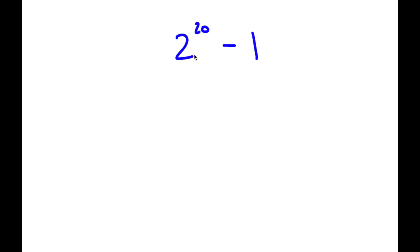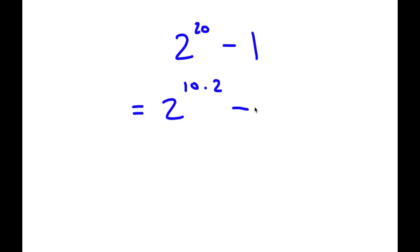So in this problem, I have 2 to the power of 20 minus 1. To solve this, I'm going to first rewrite this as 2 to the power of 10 times 2 minus 1.